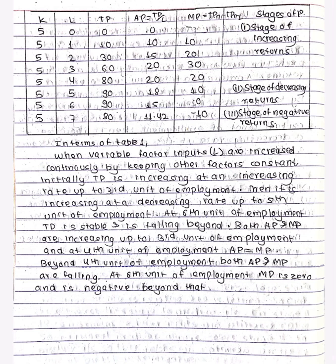In terms of the table, when variable factor input L is increased continuously by keeping other factor constant, initially TP is increasing at an increasing rate up to the 3rd unit of employment, then it is increasing at a decreasing rate up to the 5th unit of employment, and at the 6th unit of employment TP is stable and starts falling beyond that.